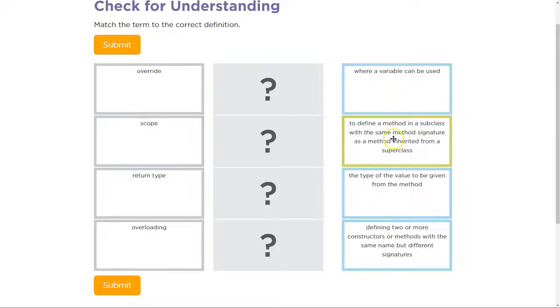Where a variable can be used; to define a method in a subclass with the same method signature as a method inherited; the type of value to be given from a method; defining two or more constructors or methods.